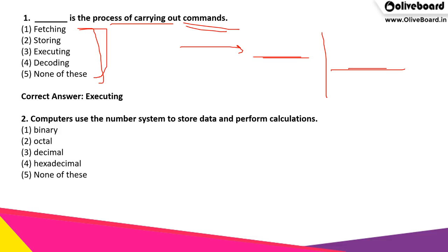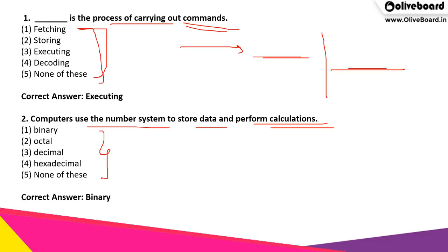The next question: computers use which number system to store data and perform calculations? The correct answer is option 1, binary. The binary number system is used by computers — they understand zeros and ones. So it is the binary number system.